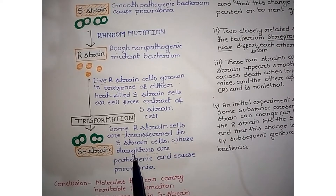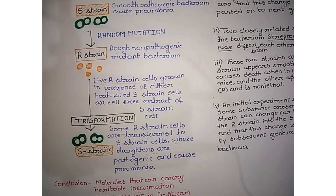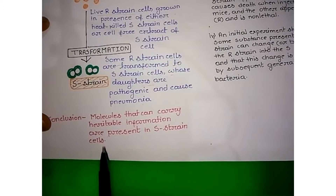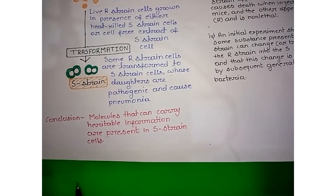This leads to transformation of some R-strain cells into S-strain cells, whose daughter cells are pathogenic and cause pneumonia. Some R-strain cells transform into S-strain, and the daughter cells show a lethal effect. We can therefore conclude that there is something present inside the S-strain cell that leads to the transformation of R-strain into S-strain.